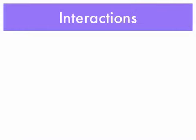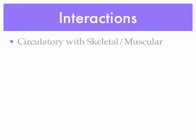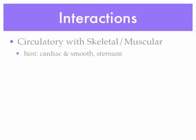Now let's talk about interactions — and I'm going to let you do most of the work. The first interaction is the circulatory system with the skeletal system and/or muscular system. Here's a hint: cardiac, smooth, sternum. How do you think they interact? If you struggled, remember there is cardiac muscle and smooth muscle as part of the muscular system. Cardiac muscle is found in the heart — that's what keeps the heart beating all the time.